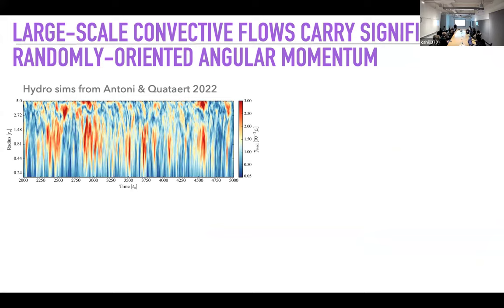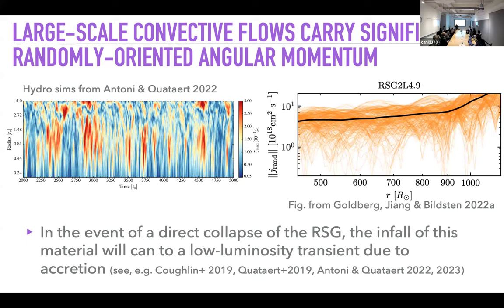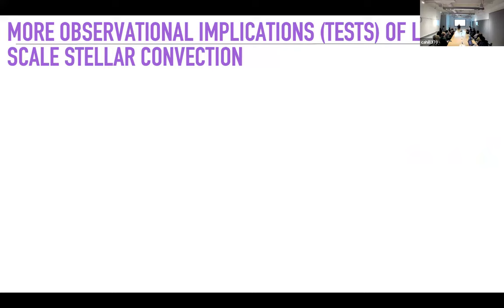Another interesting result: large-scale convective flows can carry significant randomly oriented angular momentum. Work by Elliot Quataert, André Antoni, and others — and quantified in our models as well — shows that in the event that the big envelope directly collapses into a black hole (if the supernova mechanism fails), these large-scale flows with random angular momentum can produce an angular momentum-driven transient — almost a jittering-jets type event — that could look like a luminous transient or something similar.